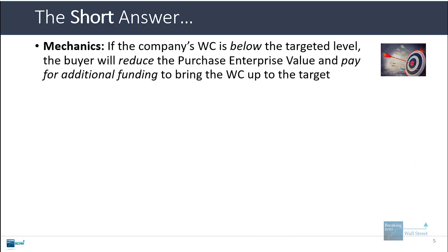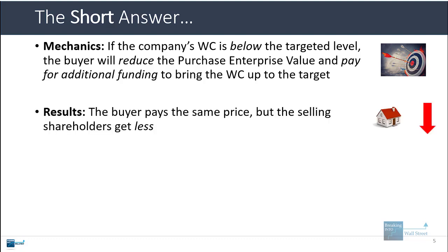If a company's working capital is below the targeted level, the buyer will reduce the purchase enterprise value and pay for additional funding to bring the working capital up to the target. The result is that the buyer pays the same effective price, but the selling shareholders get less. Let's take a look at how this works in Excel in a very simple LBO model for a private company.